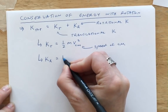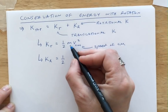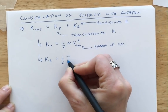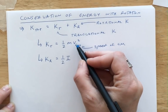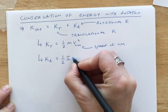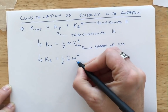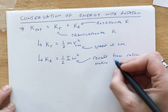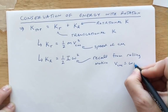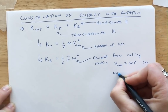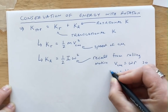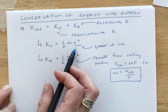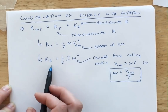In rotational equations, we use analogous terms: instead of mass (linear inertia), we use moment of inertia I; instead of linear speed, we use rotational speed omega. So K_R = ½Iω². Recalling from rolling motion that V_cm = ωR, we can write omega = V_cm / R. This is an important problem-solving relationship because it lets you relate omega in K_R to the center of mass speed in K_T.